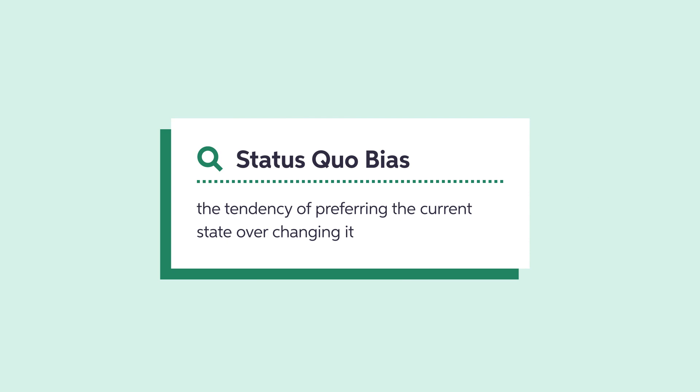Choosing might also be burdensome for people. This often leads to the status quo bias, the tendency of taking the status quo as a reference point and not deviating from it. For instance, organ donors increase drastically when people are requested to waive their registration as a donor instead of actively enrolling, suggesting that people tend to stick with the choice that is assigned to them rather than question it.